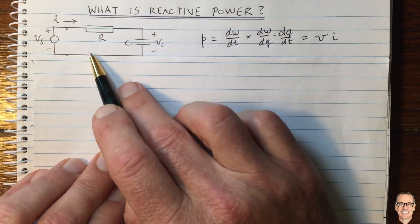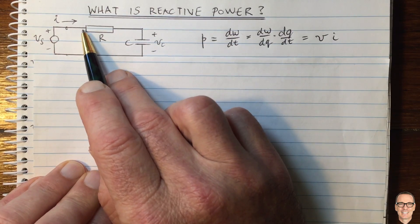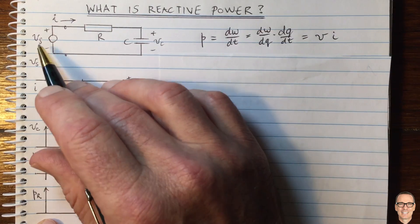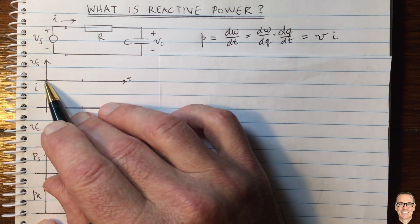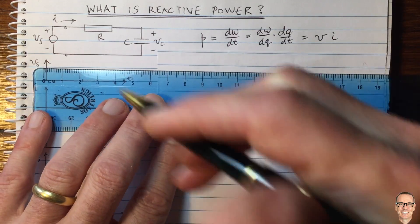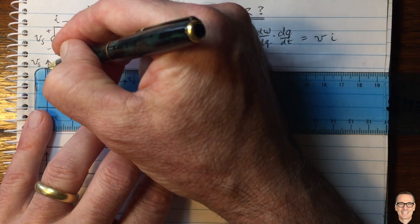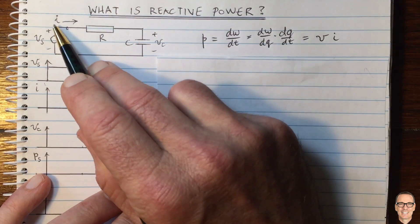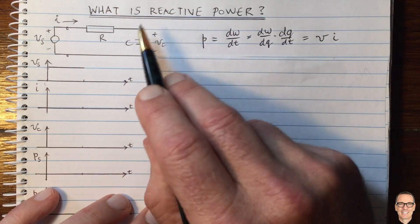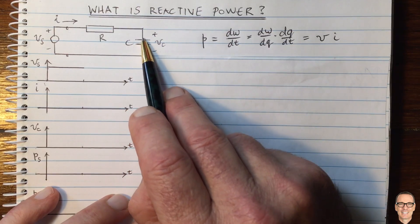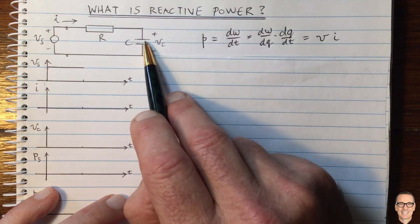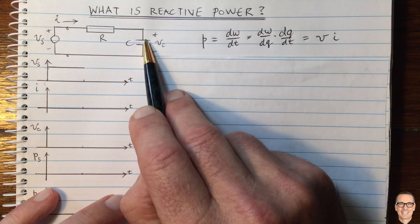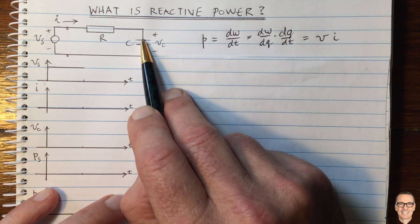Now let's look at our circuit and think about the power flowing into it from the source. Let's sketch some plots. Assume the voltage at the supply starts at zero, then goes up to a constant value for a period of time. This sudden jump creates a voltage drop across the resistor, so current starts flowing through the resistor. That means electrons are being drawn off the top plate of the capacitor — there's a video on the channel explaining capacitors in more detail.